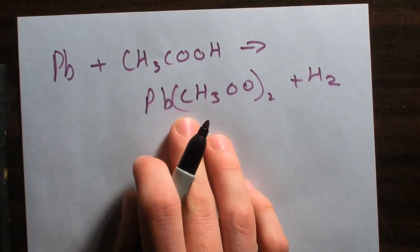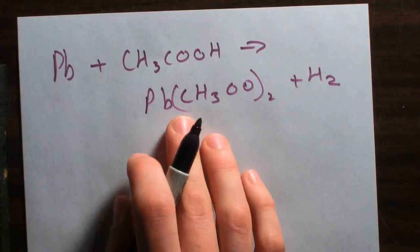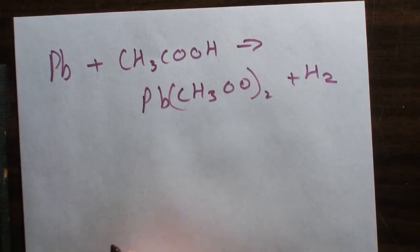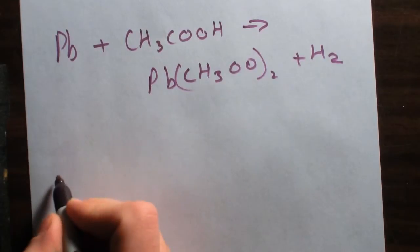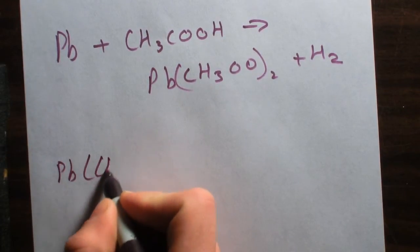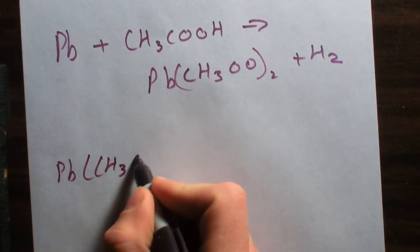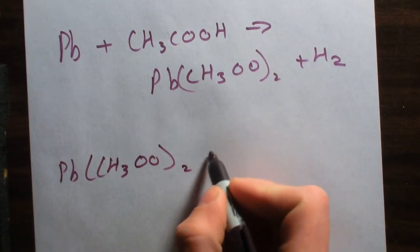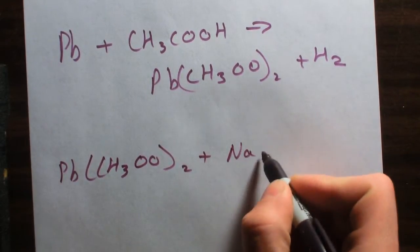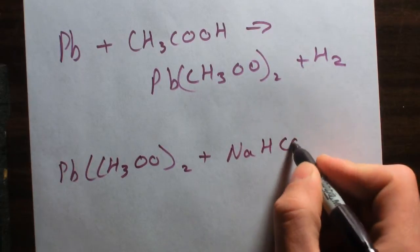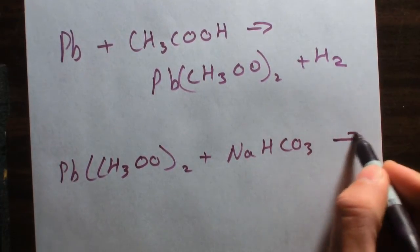So once we have our lead acetate in solution, we're going to convert that into basic lead carbonate. So we're going to take our lead acetate which will still be in solution and react it with sodium bicarbonate, which is just regular old baking soda.